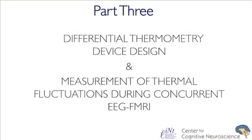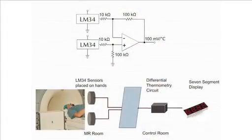We developed a device to collect differential hand temperature measurements during simultaneous EEG fMRI following the hypnotic cold glove suggestion. The device consists of two LM34 temperature sensors connected to an amplifier and a digital display. Two 9-volt batteries supply power to the internal electronics.